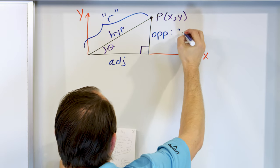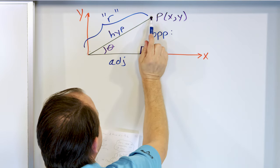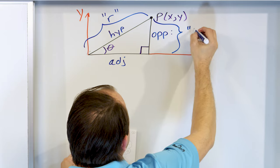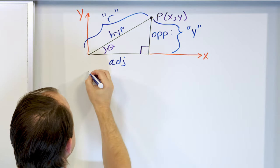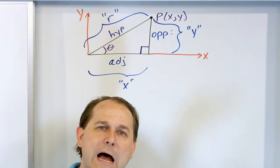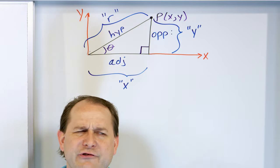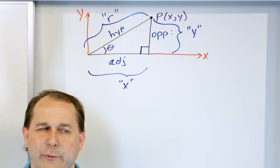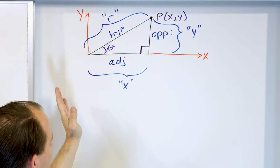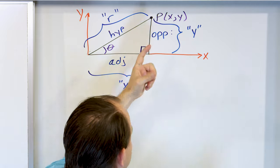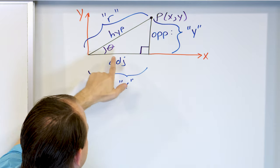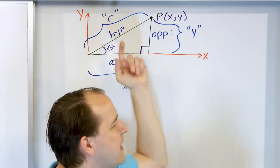The opposite side goes from point P down to the axis, so it is Y units above the axis — we also call it Y. The adjacent side is X distance units along the axis — we also call it X. So every right triangle has a hypotenuse R, an opposite side Y, and an adjacent side X. That's what we're basically doing.